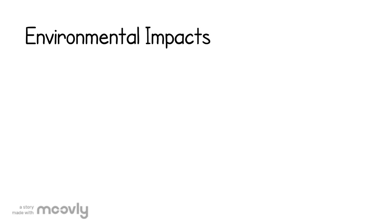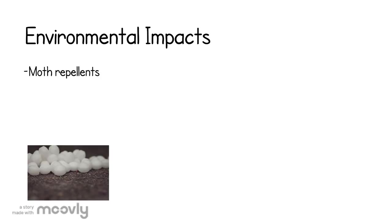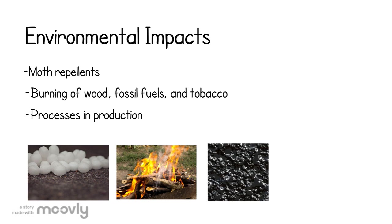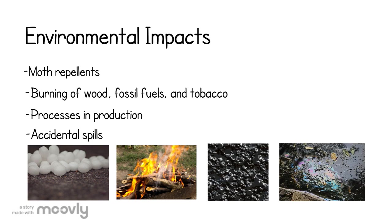Naphthalene can be released into the environment from the use of moth repellents, burning of wood, fossil fuels, and tobacco, processes in production from coal tar or petroleum, and accidental spills.